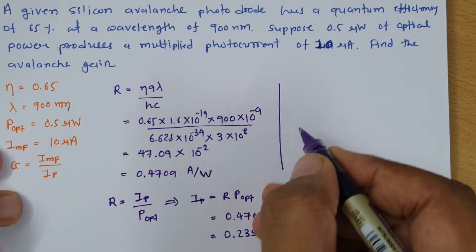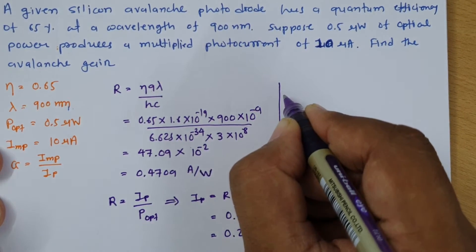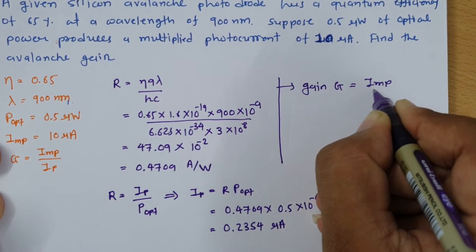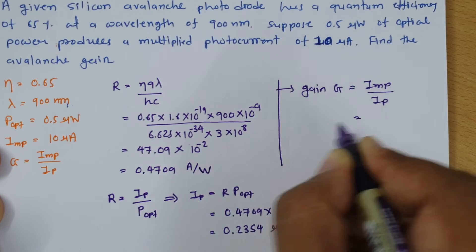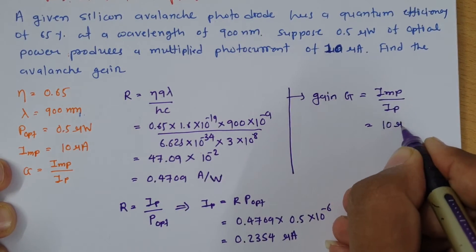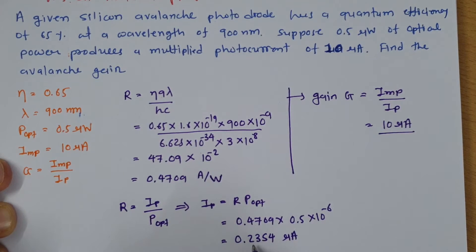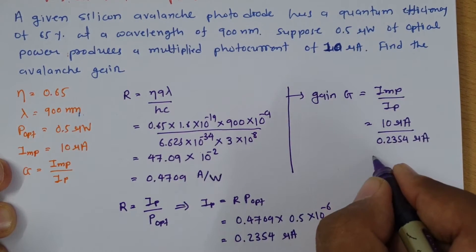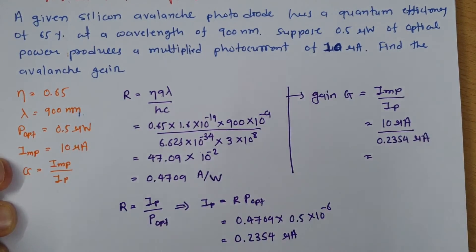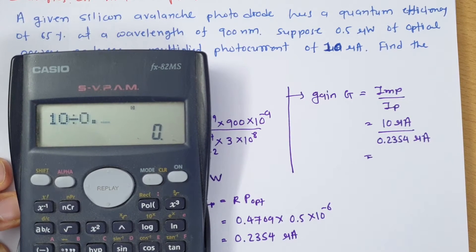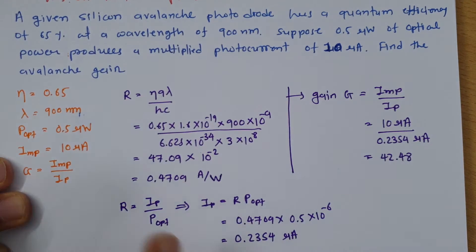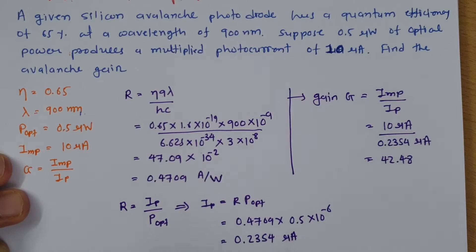Now, the gain of the avalanche photodiode: G = multiplied photocurrent / photocurrent. Multiplied photocurrent is given as 10 microampere, and the photocurrent we calculated is 0.2354 microampere. The micro units cancel, so G = 10 / 0.2354 = 42.48. The gain of this avalanche photodiode is 42.48.